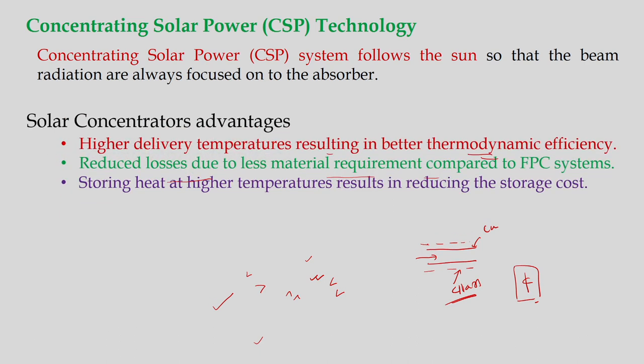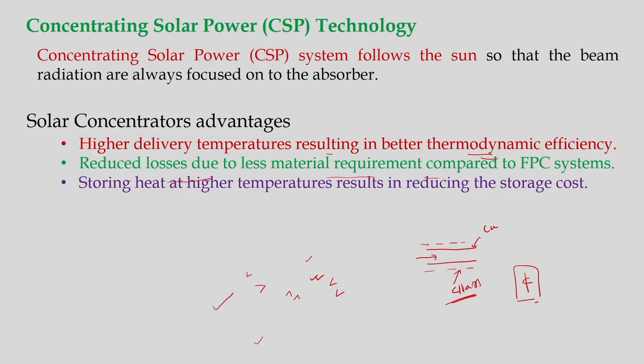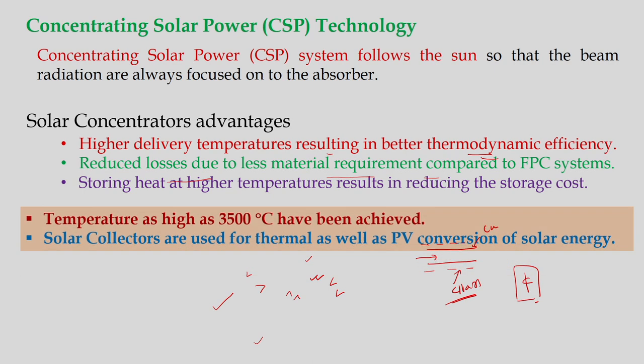There are some advantages of this kind of technology. First, there is better thermodynamic efficiency because the operating temperature range is higher. Second, less material is required compared to flat plate collectors, and there is reduced storage cost. Temperatures as high as 3500°C have been achieved using this kind of collectors, making them high-temperature collectors.